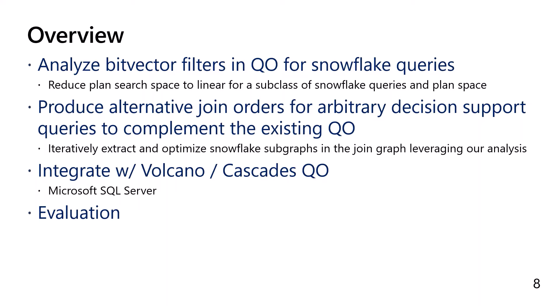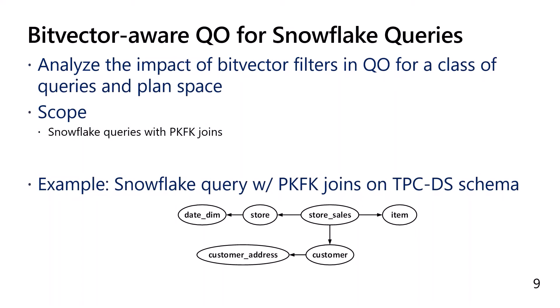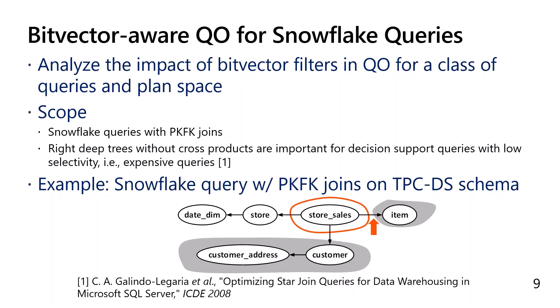I will then show how we integrate the technique into Microsoft SQL Server. For the scope of our analysis, we focus on snowflake queries with primary key foreign key joins. Here is an example of a snowflake query with PKFK joins on TPC-DS schema. Store sales is a fact table that joins with dimension tables via PKFK joins, where the arrow in the join graph points from the fact table to the dimension table. The PKFK joins can also be recursive, where the fact table joins with a chain of dimension tables. We scope our analysis to the plan space of right-deep trees without cross products, as this has been shown to be an important plan space for expensive decision support queries.